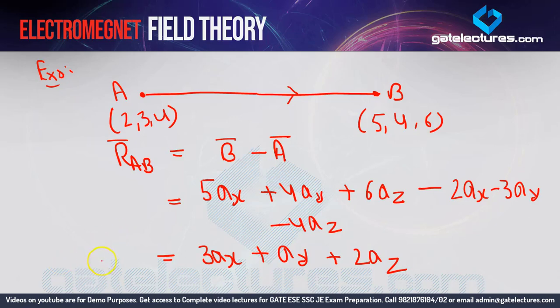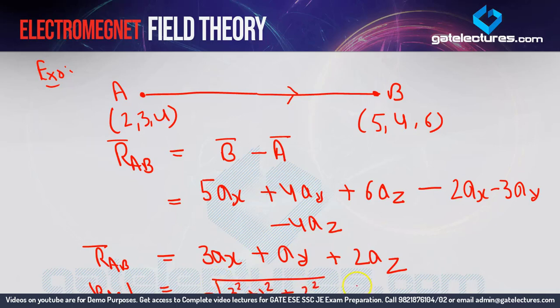Now that we have the distance vector, we can also find its mod — which gives the actual distance between A and B. Mod = √(3² + 1² + 2²) = √(9 + 1 + 4) = √14. So the distance between point A and point B is √14.